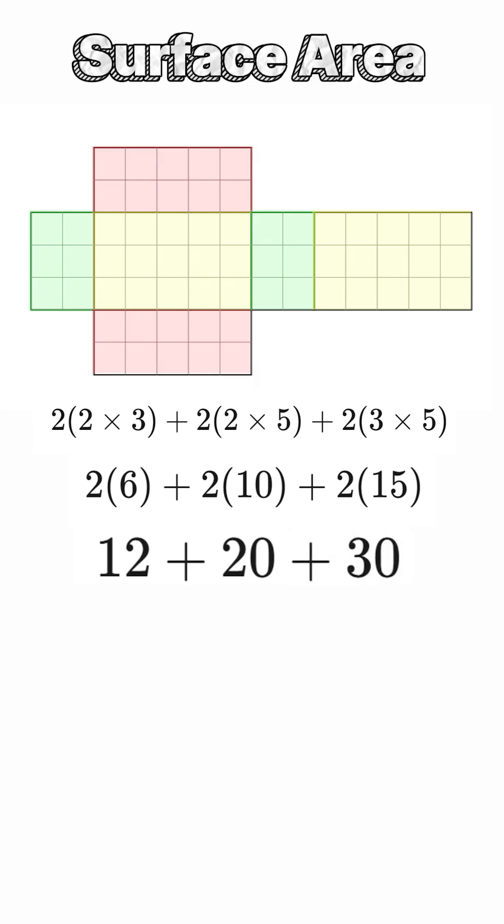Finally, we add the areas of all six faces. 12 plus 20 plus 30 equals 62 square units. That means the surface area of the rectangular prism is 62 square units, which represents the total number of square units needed to completely cover all six faces of the prism.